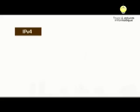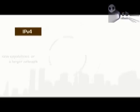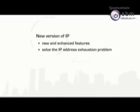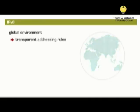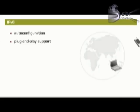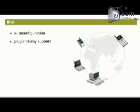IPv4 will soon reach the stage where a choice has to be made between either new capabilities or a larger network, but not both. In other words, we need a new version of the IP protocol to provide new and enhanced features in addition to solving the IP address exhaustion problem. That new version of IP is IPv6. IPv6 is designed to meet the requirements of the potentially huge Internet expansion. It will allow a return to a global environment where the addressing rules of the network are transparent to the applications again. Through auto-configuration and plug-and-play support, network devices will be able to connect to the network without manual configuration and without any bootstrap services, such as DHCP servers.